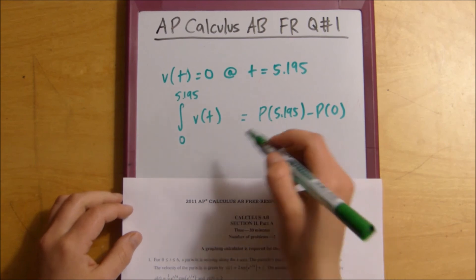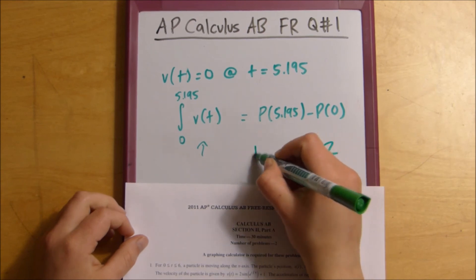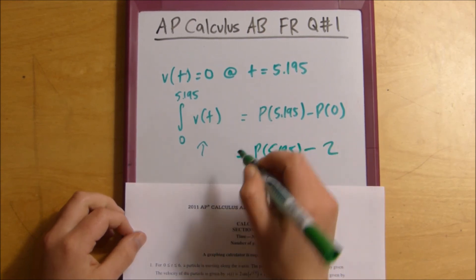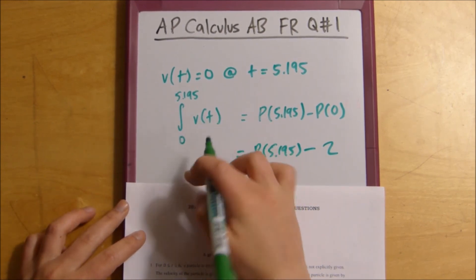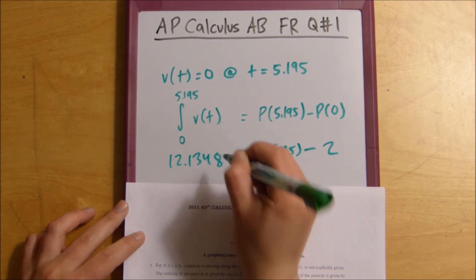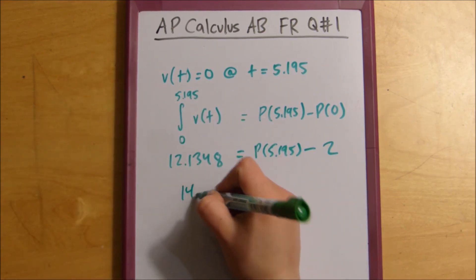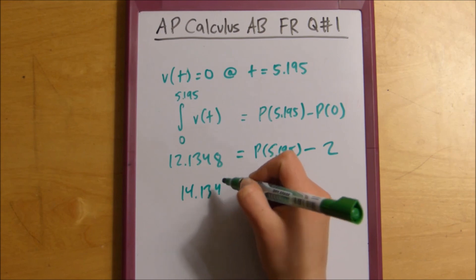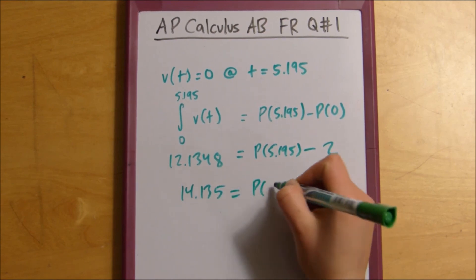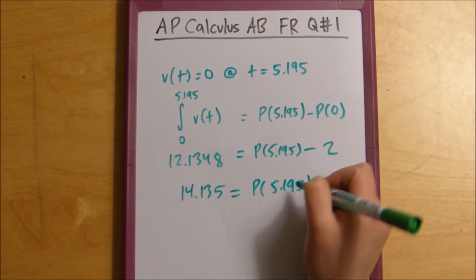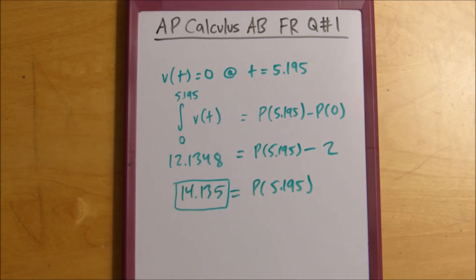This is the rule of integrals or something like that. And basically, since you know what this number is, you can just plug this into your calculator and then just solve backwards. So, if we plug this in, we end up with this being 12.1348 equals that. Then we add 2 to the other side and we end up with 14.135 equals P of 5.195. That is the answer to that question and that is how simple it is to solve.